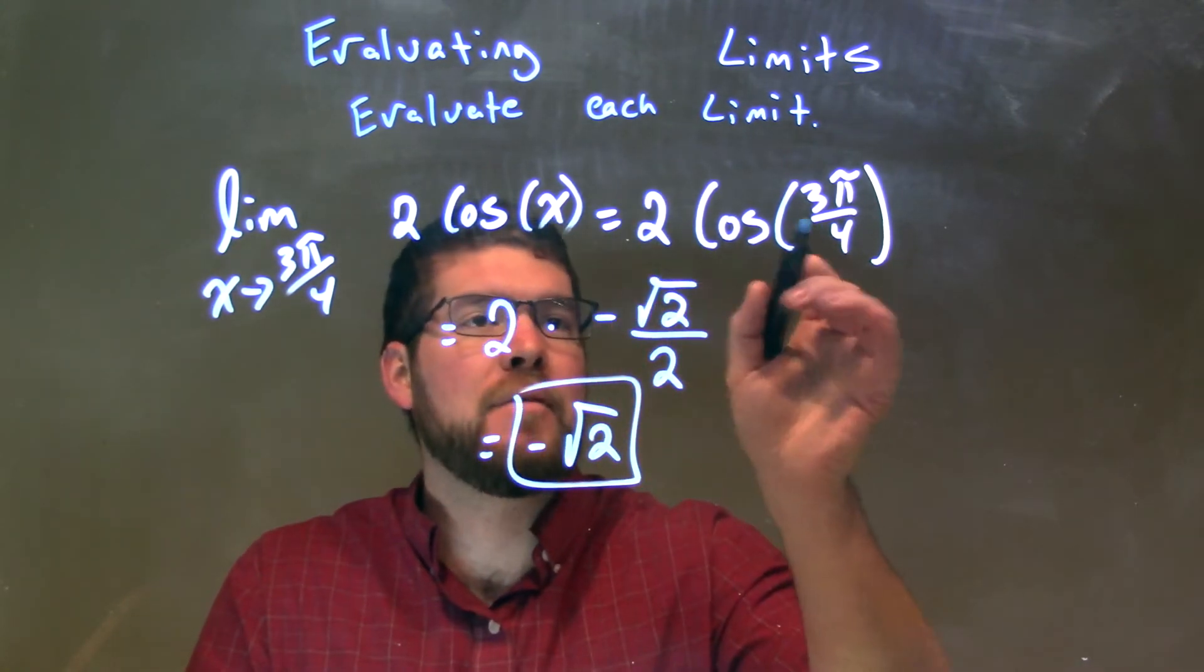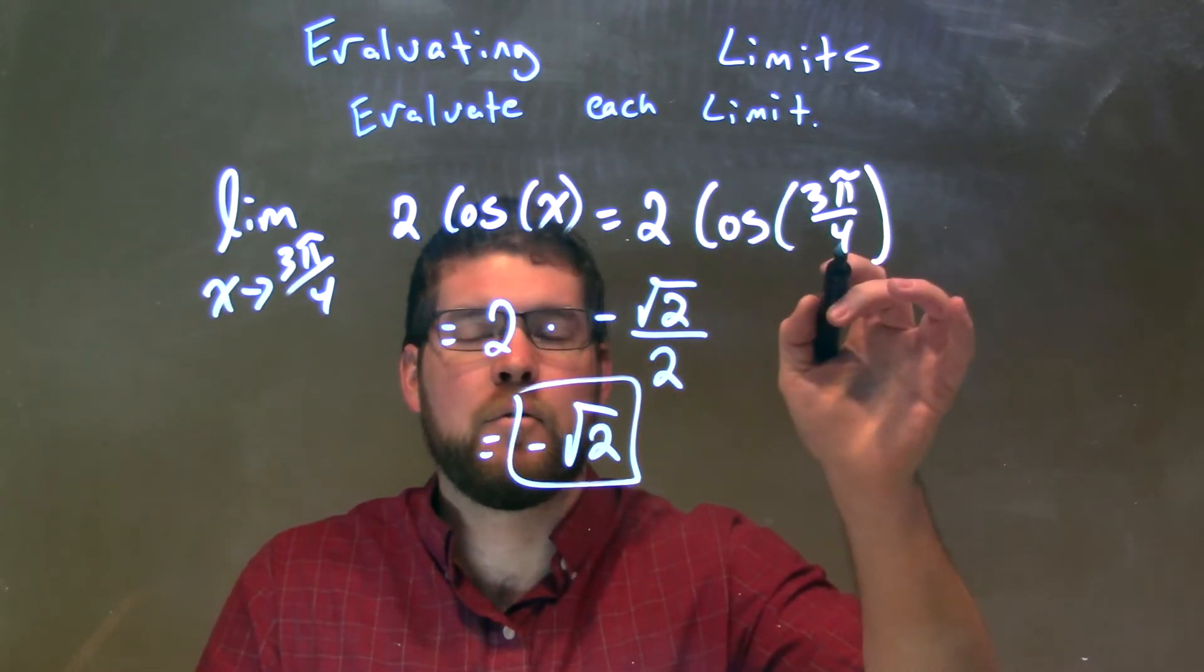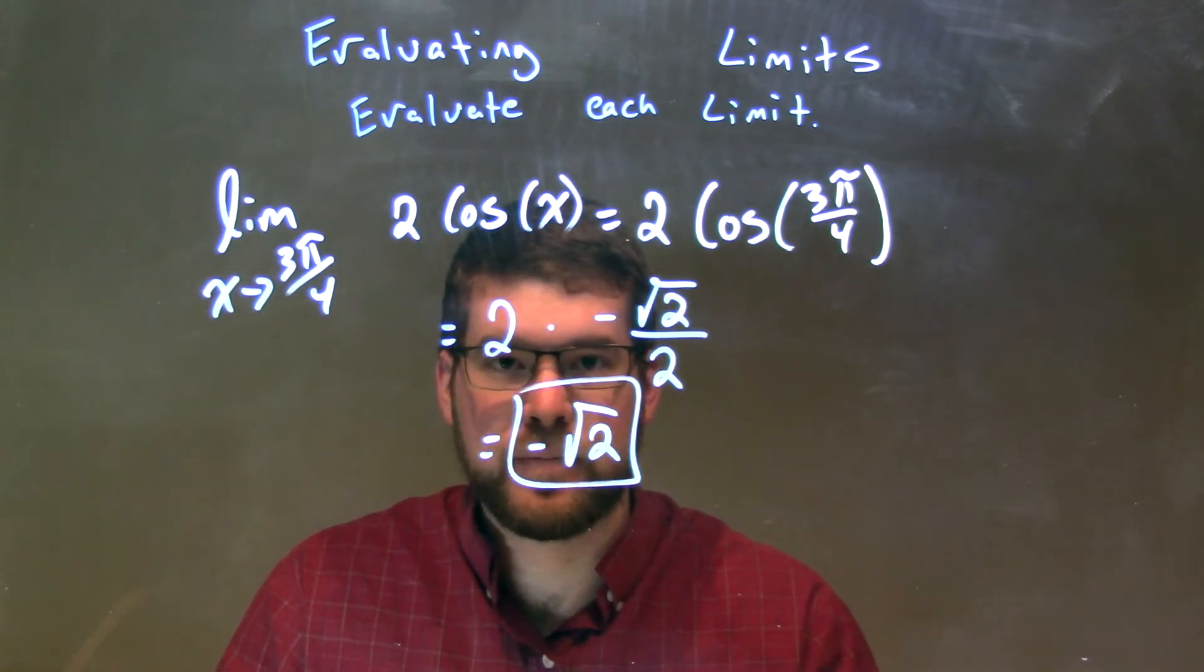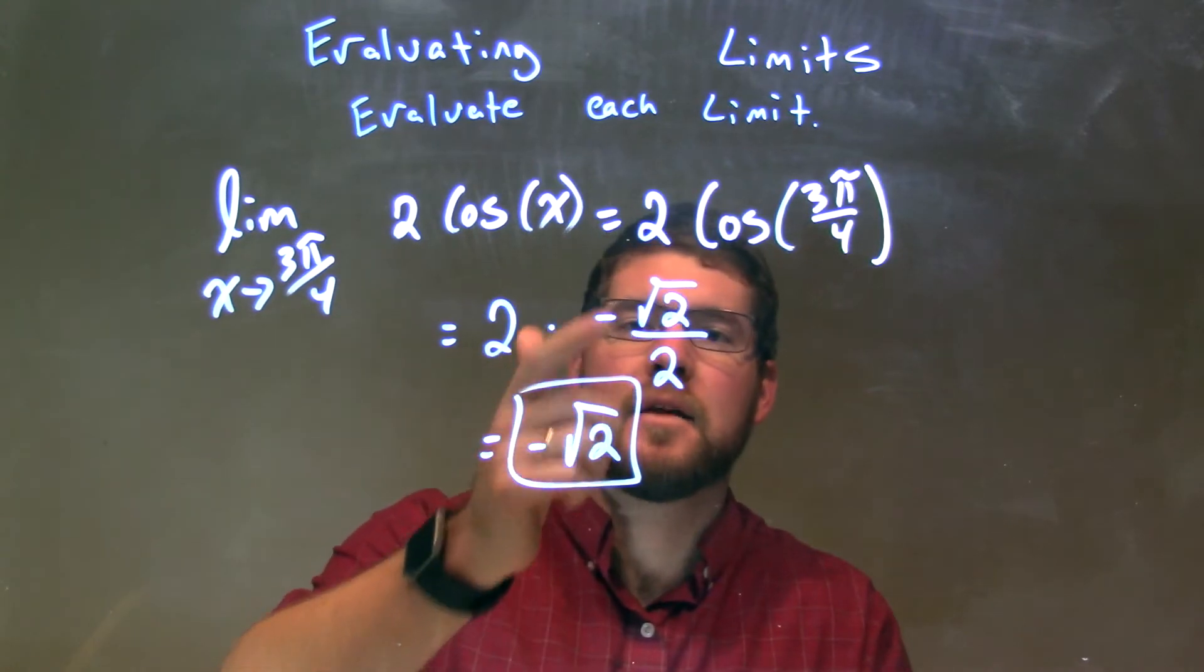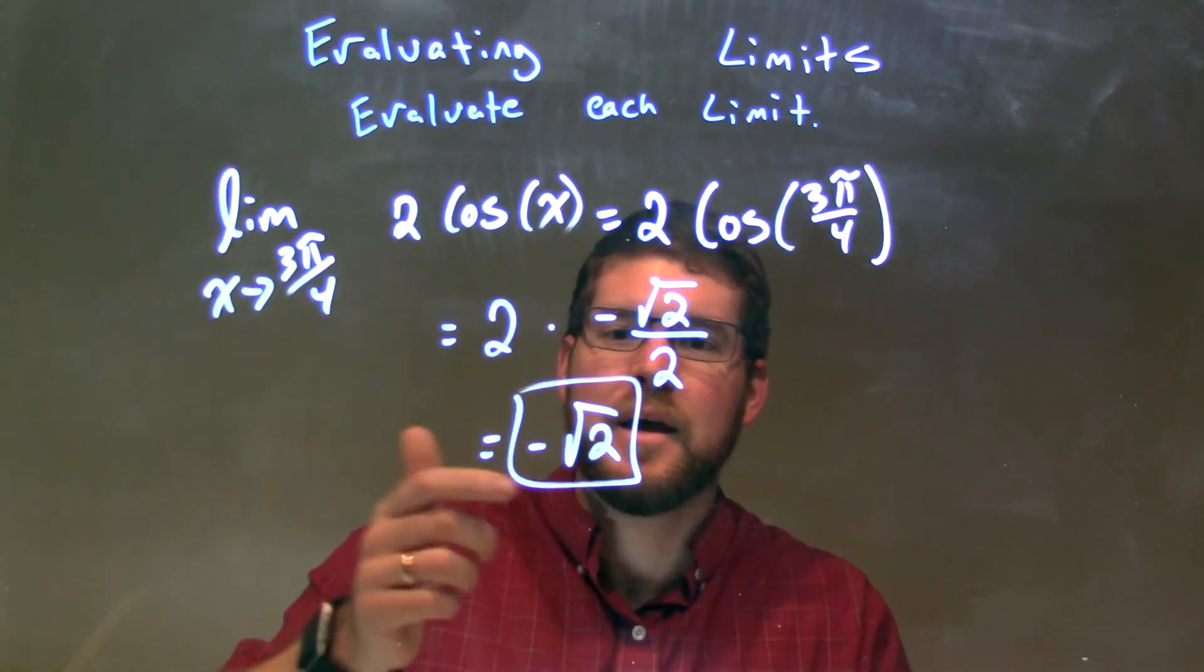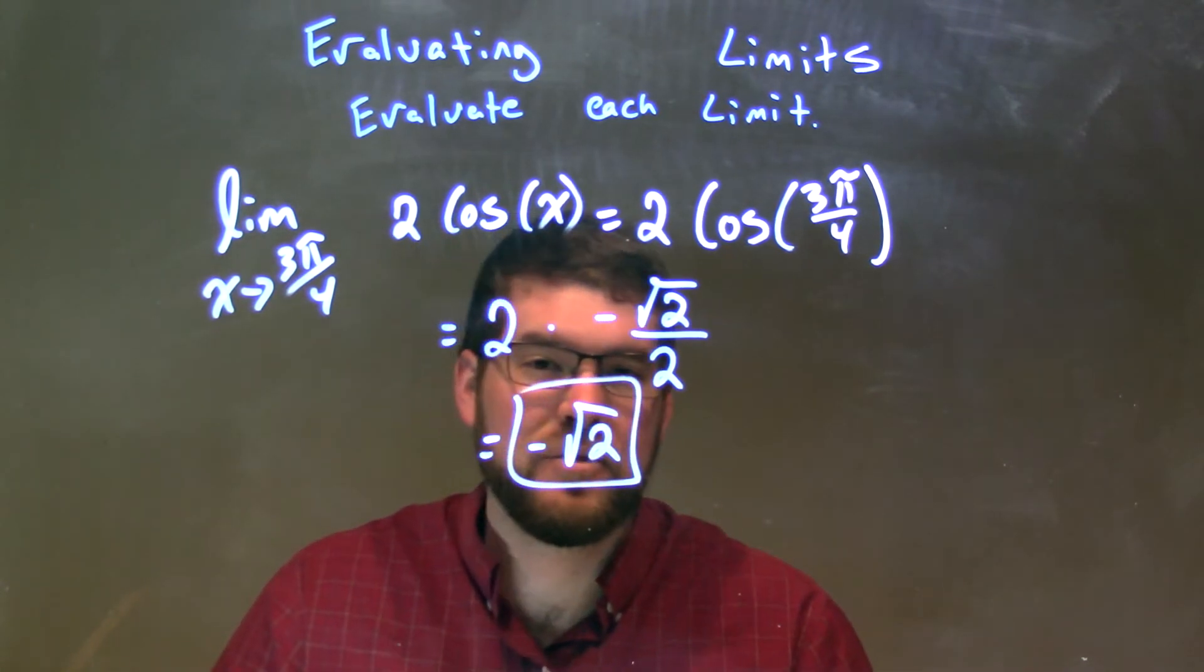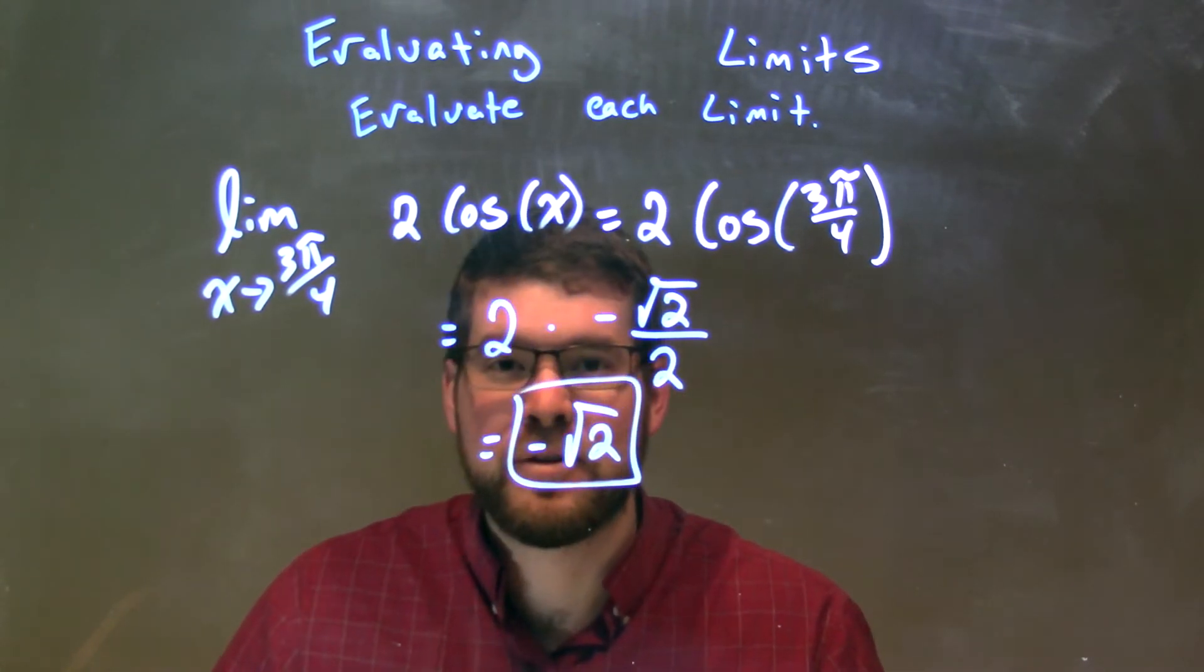And so we have 2 times the cosine of 3π/4. Cosine of 3π/4 is negative square root of 2 over 2. Well, 2 times negative square root of 2 over 2 is equal—we multiply that out, 2's cancel, we're left with negative square root of 2, and that is our final answer to this limit.